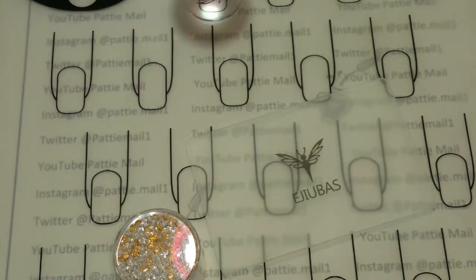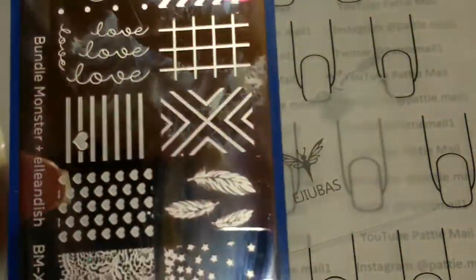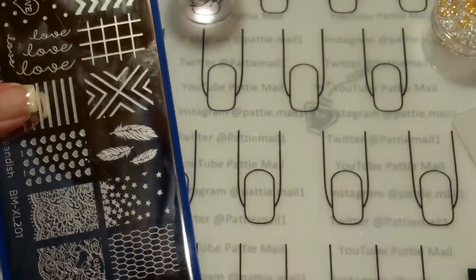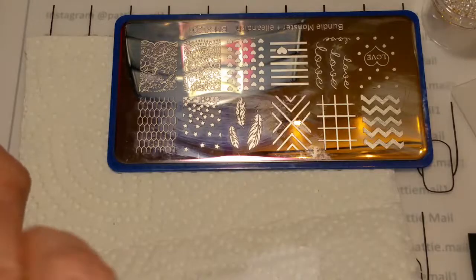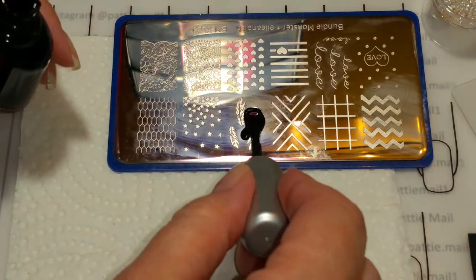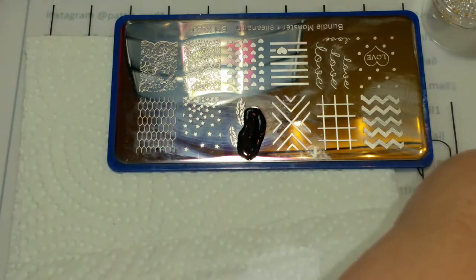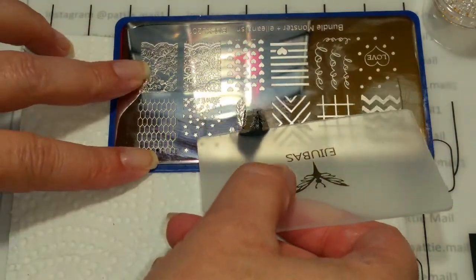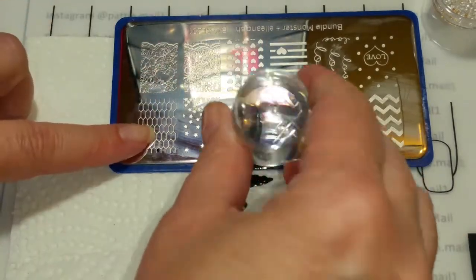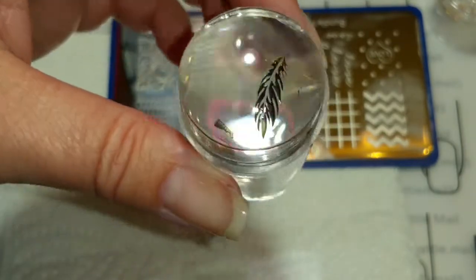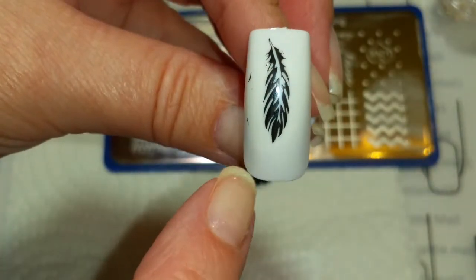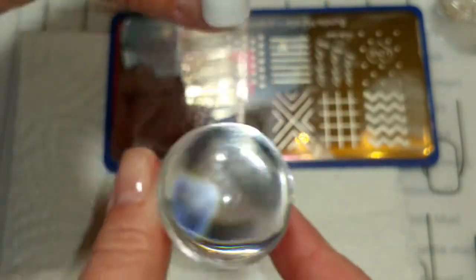Now let's test it out. I have this Bundle Monster plate which I know these images work perfectly, and I have my Moira black stamping polish which I know is really good. I'm going to lightly scrape it because that's what I had to do the last time I used a thicker scraper, and then pick it up with a rolling motion. That looks really good. Nice pickup. Let's put it on a fake nail. That's very good.